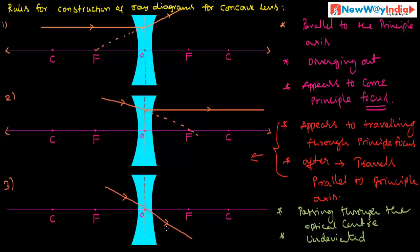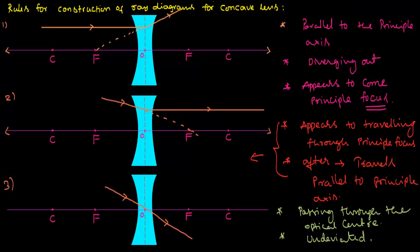When a ray passes through the optical center of the concave lens, it is undeviated. This is the third rule. These are the important rules for constructing ray diagrams for a concave lens. Thank you.